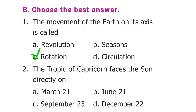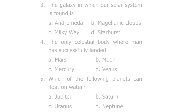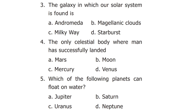The second question is: the Tropic of Capricorn faces the sun directly on. We have four options. The correct option is option D, December 22. The third question is: the galaxy in which our solar system is found is. The answer is Milky Way.